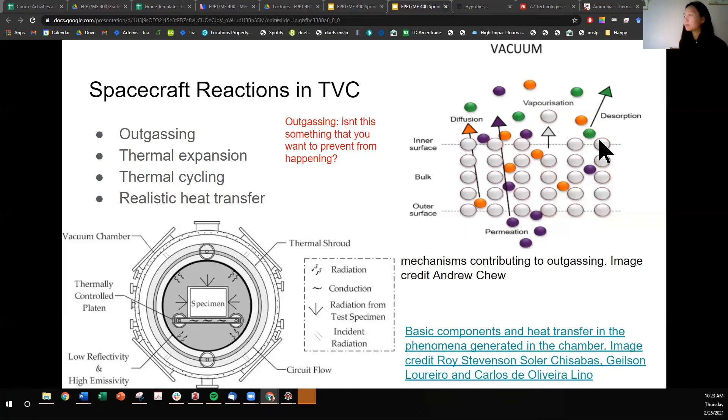I don't know if I want to go into this picture, but this is a picture that shows mechanisms contributing to outgassing. Pretty much there's a bulk material and there are molecules that will diffuse or vaporize or go through desorption. It could also be that there are materials on the other side that permeate through this material. Outgassing can be bad for the thermal vacuum chamber if like chunks come out and like go through the pumps. That's no good.